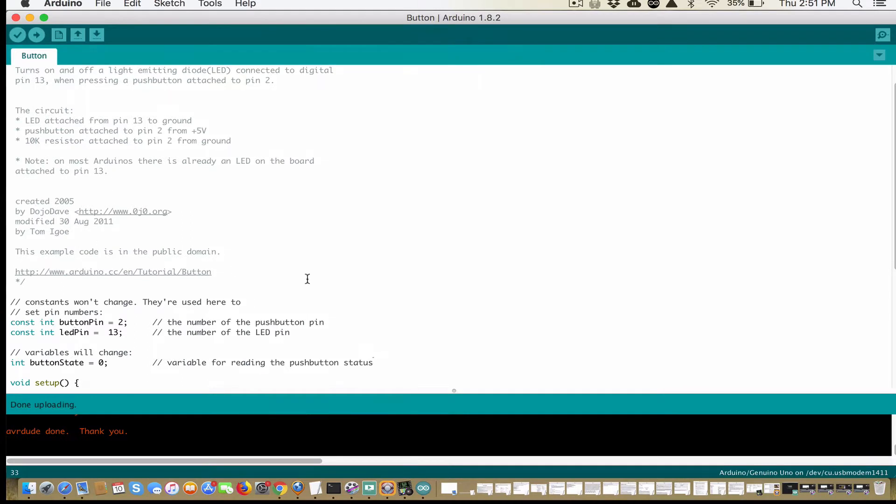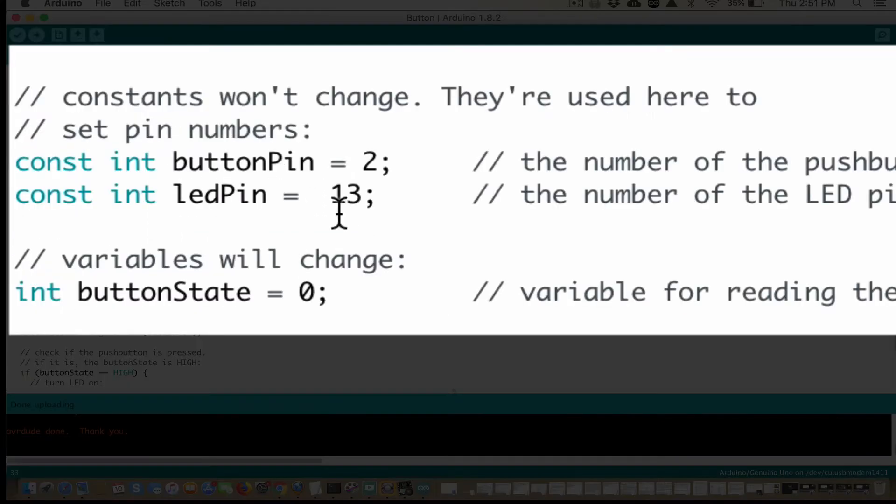We have our introductory code at the start. Here at the top, we have const int button pin equals two. So what we have here are variables. So now button pin means the number two, and LED pin means the number 13. We know that pin 13 from one of our earlier episodes, pin 13 is the light that's on the Arduino itself.